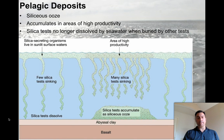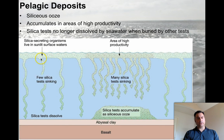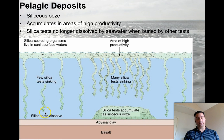Where do siliceous oozes form? They accumulate in areas of high productivity where you get more tests sinking. Most silica tests seem to dissolve before hitting the abyssal clay, so we don't see it everywhere — but above an area of high productivity we see a big pile of it. Once the silica tests are buried, they're no longer dissolved by the ocean.